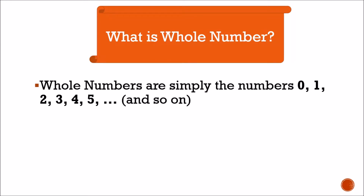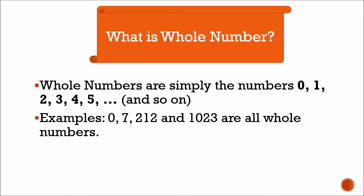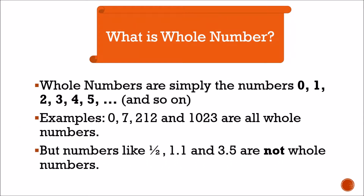Next is the whole number. What is a whole number? Whole numbers are simply the numbers 0, 1, 2, 3, 4, 5, and so on. Examples of whole numbers are 0, 7, 212, and 1023. Whole numbers start with zero. We can say whole numbers are zero plus natural numbers. But numbers like one-half, 1.1, and 3.5 are not whole numbers.